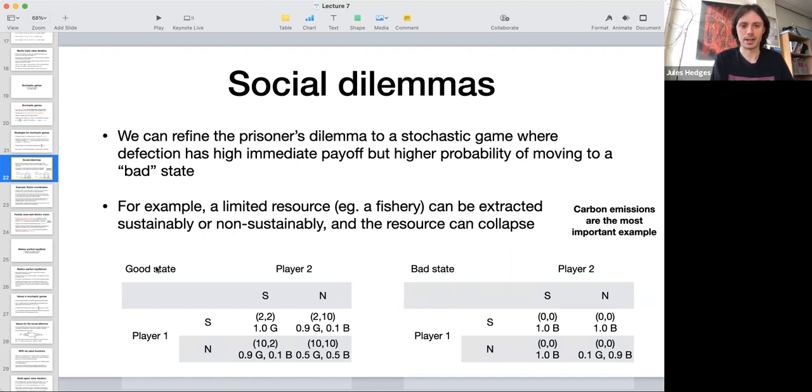It might have occurred to you that the most important example of this is carbon emissions. This is an extremely simplified model of environmental collapse where we can have a good state and then a bad state where global climate systems shift into a different attractor state.